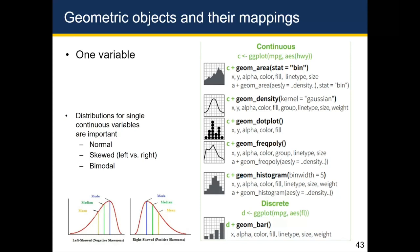At the bottom right, you see that for a single discrete variable or a nominal or categorical variable, the geom we typically use is a geom_bar, which gives us a bar plot.